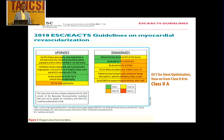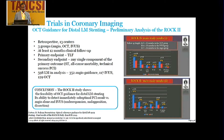For stent optimization, OCT recommendation has been upgraded from class 2B to class 2A. Newer trials like the LOCUS 2 trial also support the feasibility of OCT guidance for distal left main stenting by detecting sub-optimal PCI such as under-expansion, malapposition, and dissection, better than angiography and IVUS.